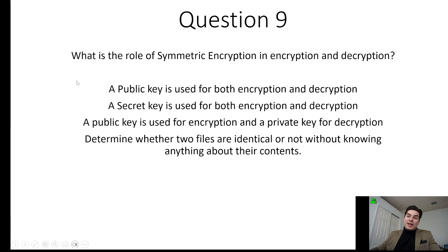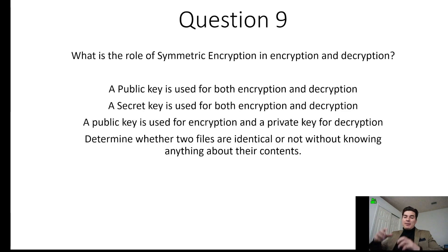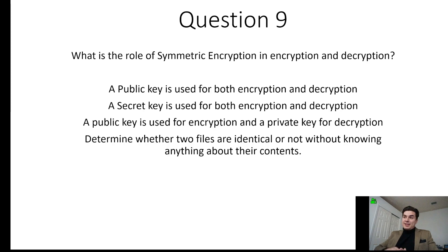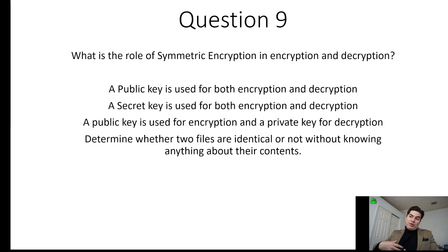The option stating a public key is used for encryption and a private key for decryption refers to asymmetric encryption. If I want to send you an email, I encrypt it with your public key, and then you decrypt it with your private key. The public key infrastructure holds all the public keys for users in an organization, so whenever you want to send someone an email, your system retrieves their public key and only that recipient can decrypt it with their private key.